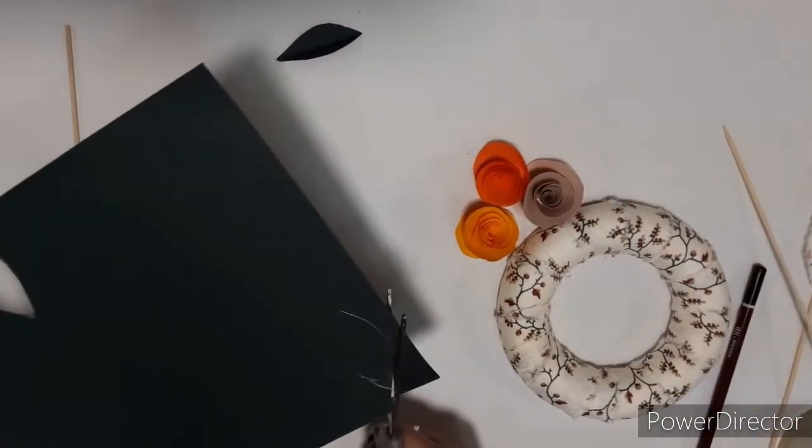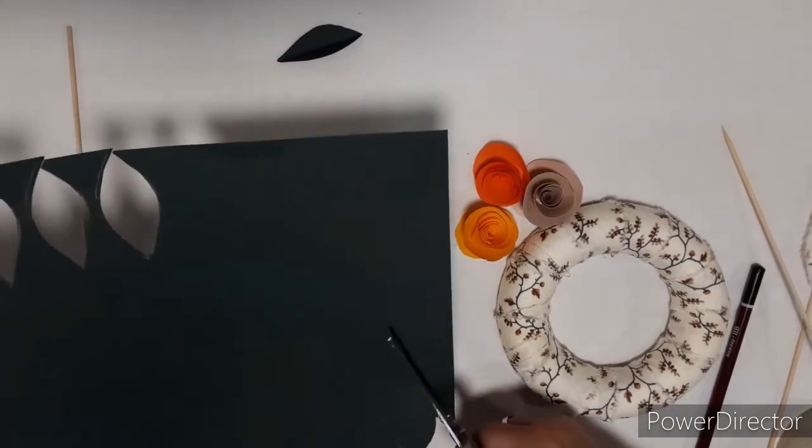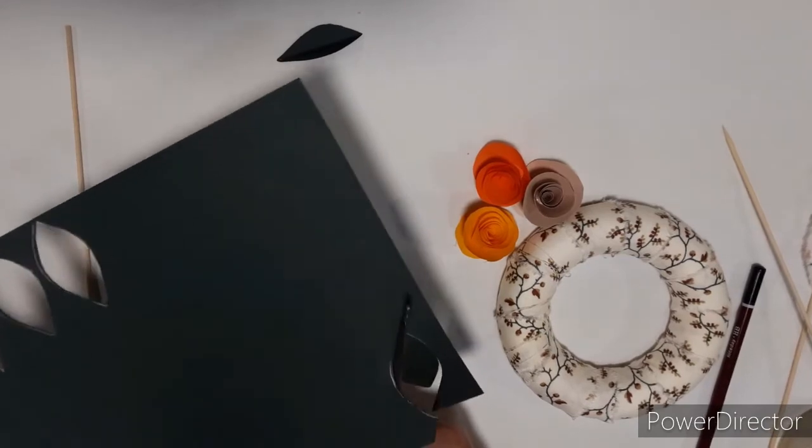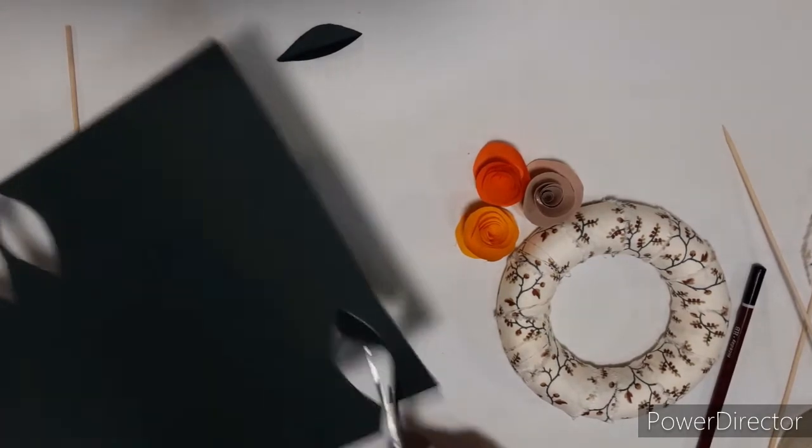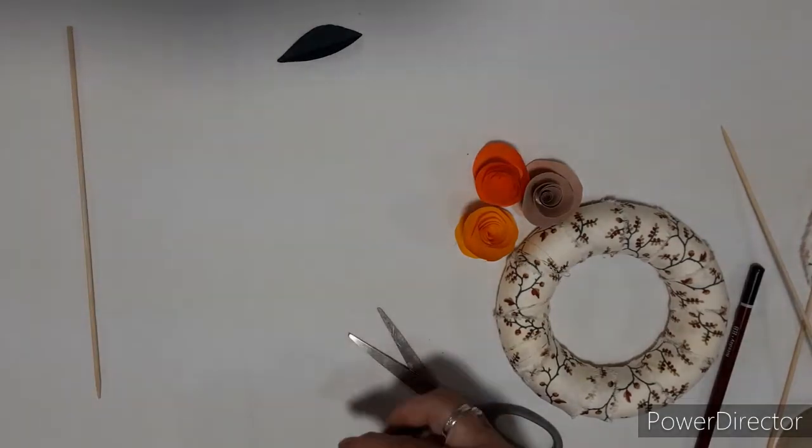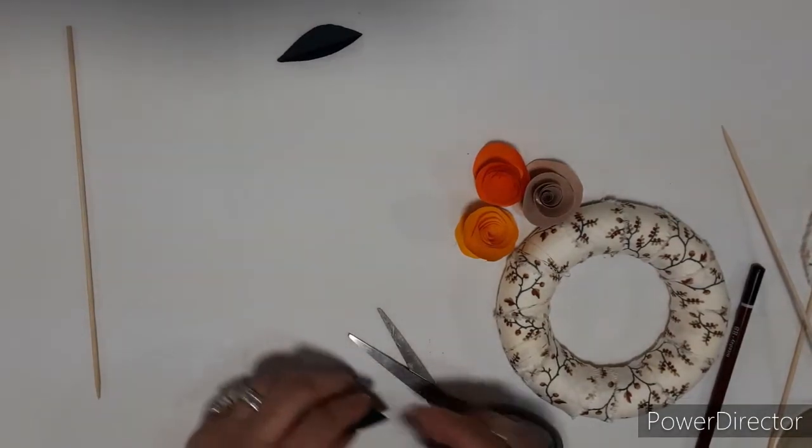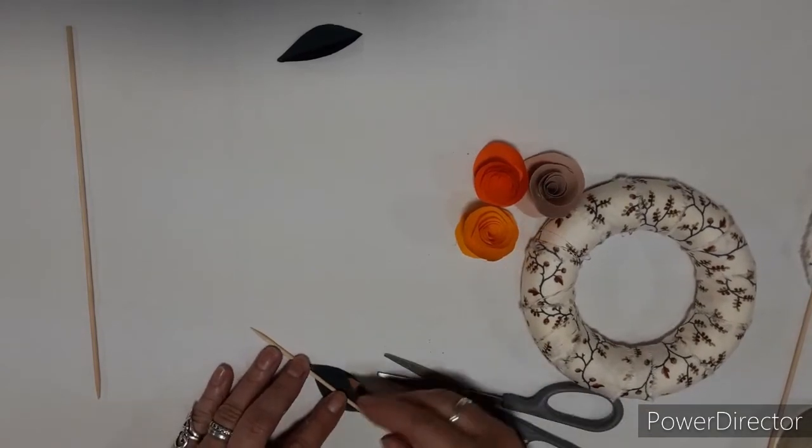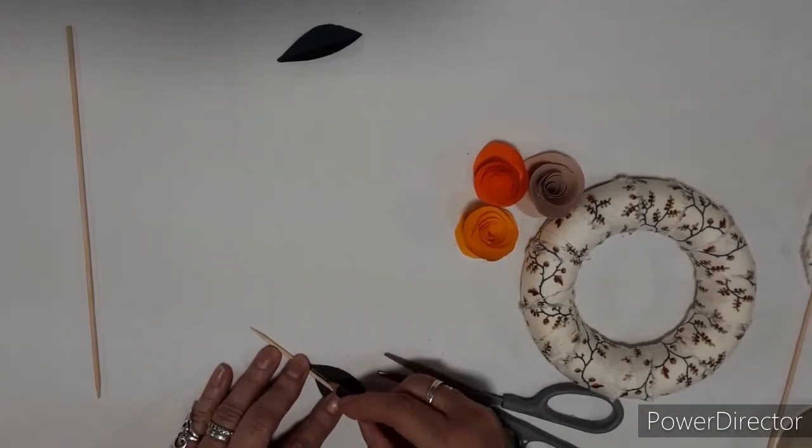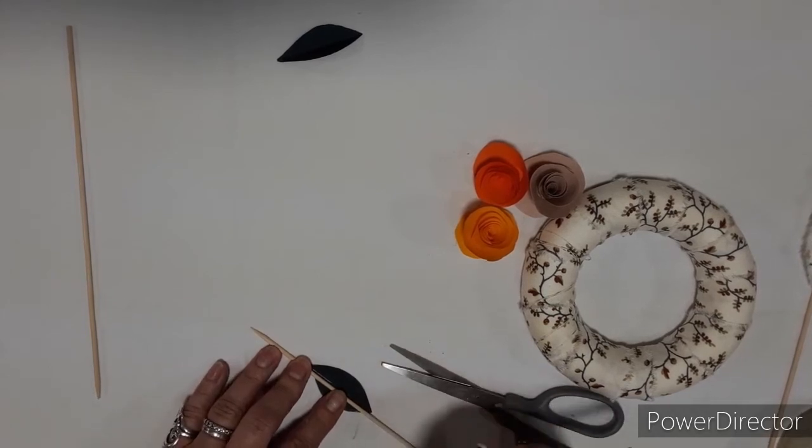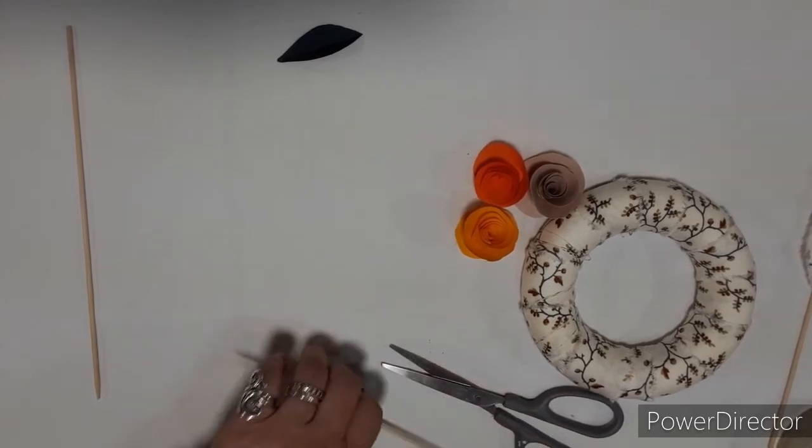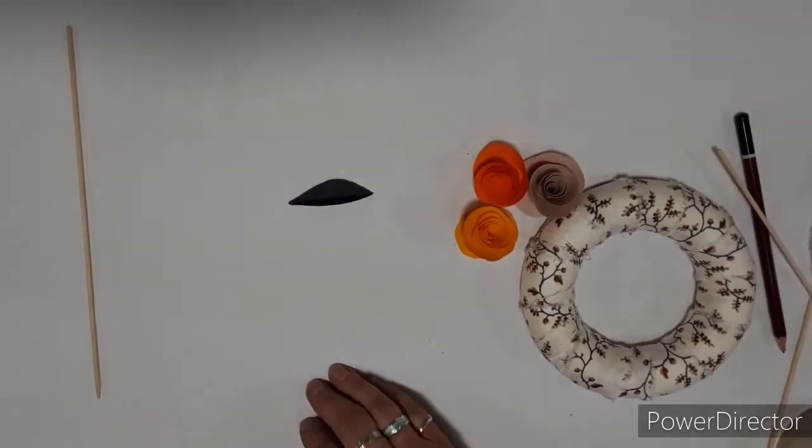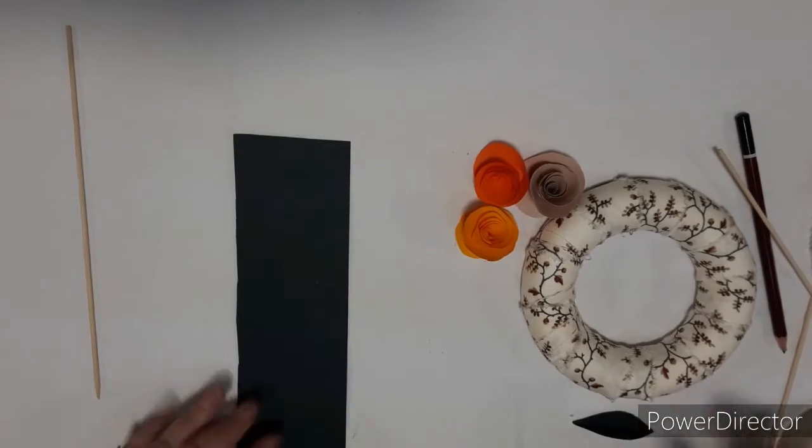Cut this out. And then we need to make the vein down the center of the leaf. So get something to draw. Draw a central vein down the leaf and then give it a fold and squeeze. Now you've got your simple leaf shape. So you can make a few of those.